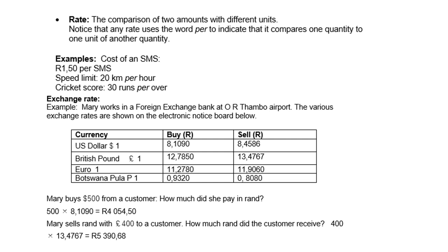For instance, if you look at the currency US dollar, then for $1, you can buy 8.1 Rand and you can sell it for 8.4. Same for British pounds, the Euro, and a Botswana Pula. So Mary buys $500 from a customer. How much did she pay in Rand? We multiply by 8.1090, because the Rand is weaker than the dollar. So the answer is 4,054 Rand and 50 cents.